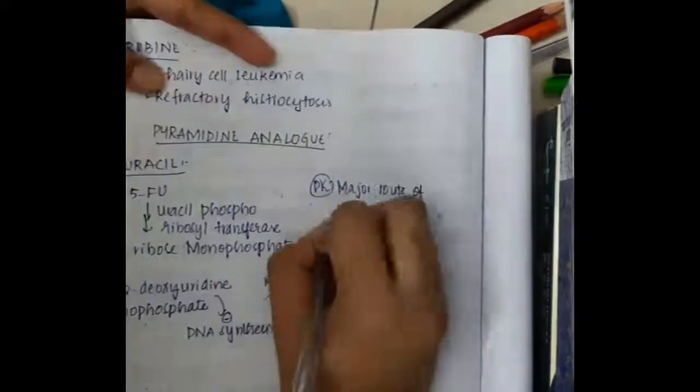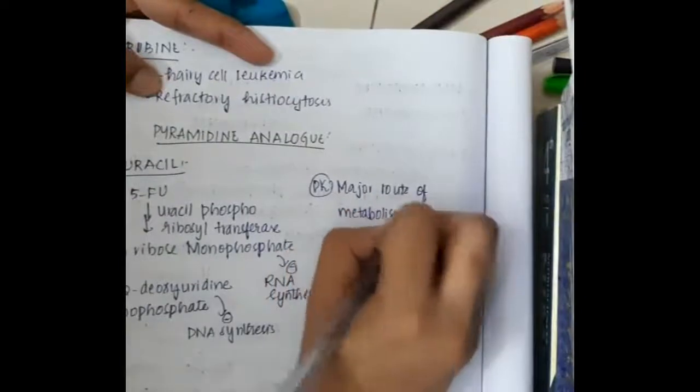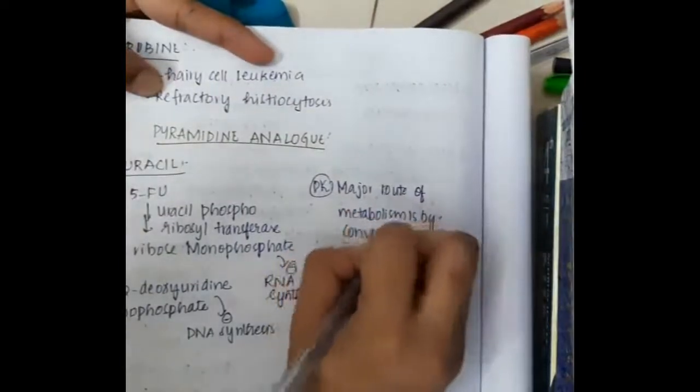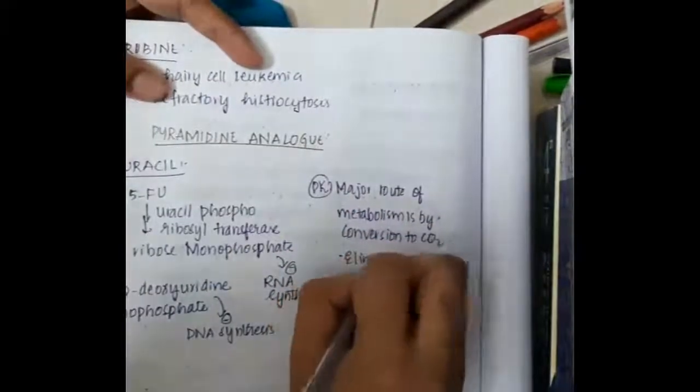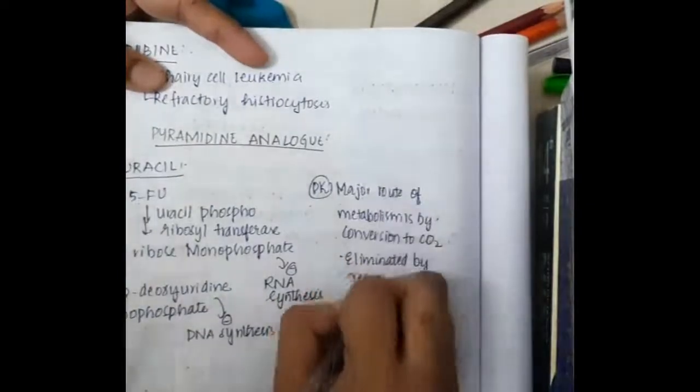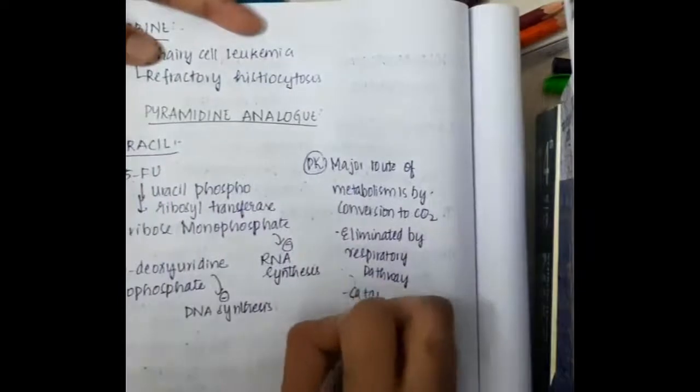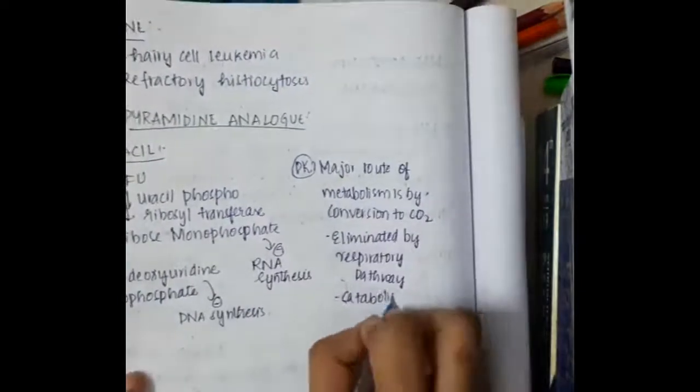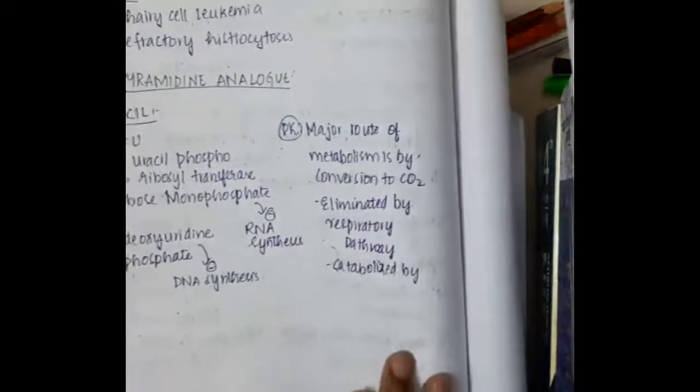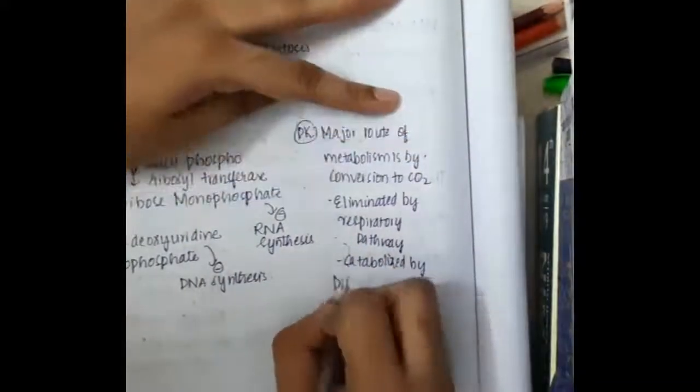Pharmacokinetics: the major route of metabolism is conversion to carbon dioxide. 5-fluorouracil is eliminated by the respiratory pathway and catabolized by dihydropyrimidine dehydrogenase.